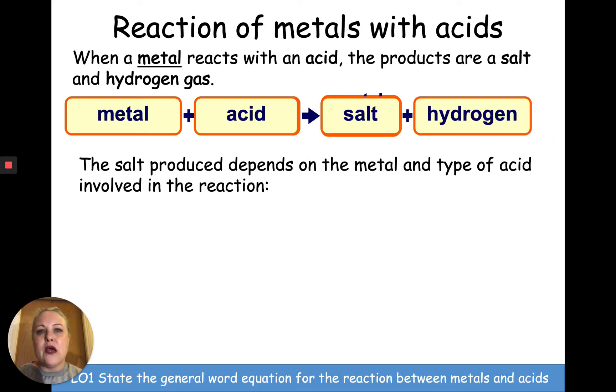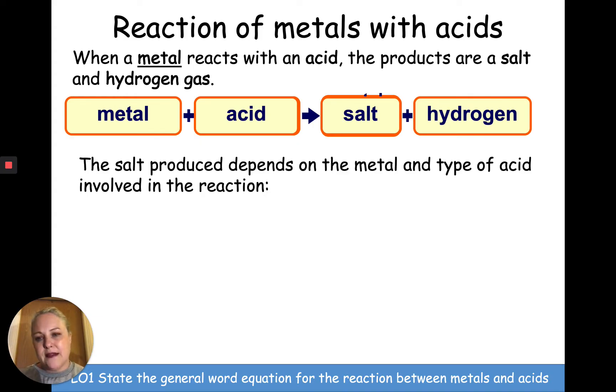So what happens? Well, a metal and an acid makes a salt and hydrogen. When a metal and an acid react, they make a salt and hydrogen.